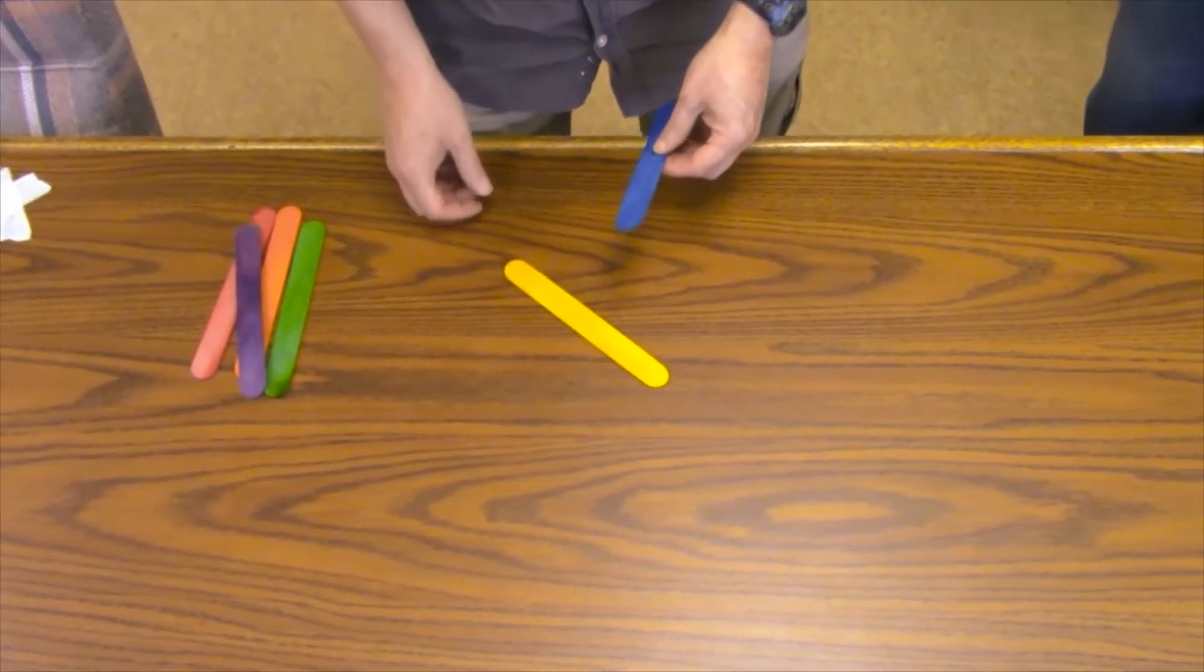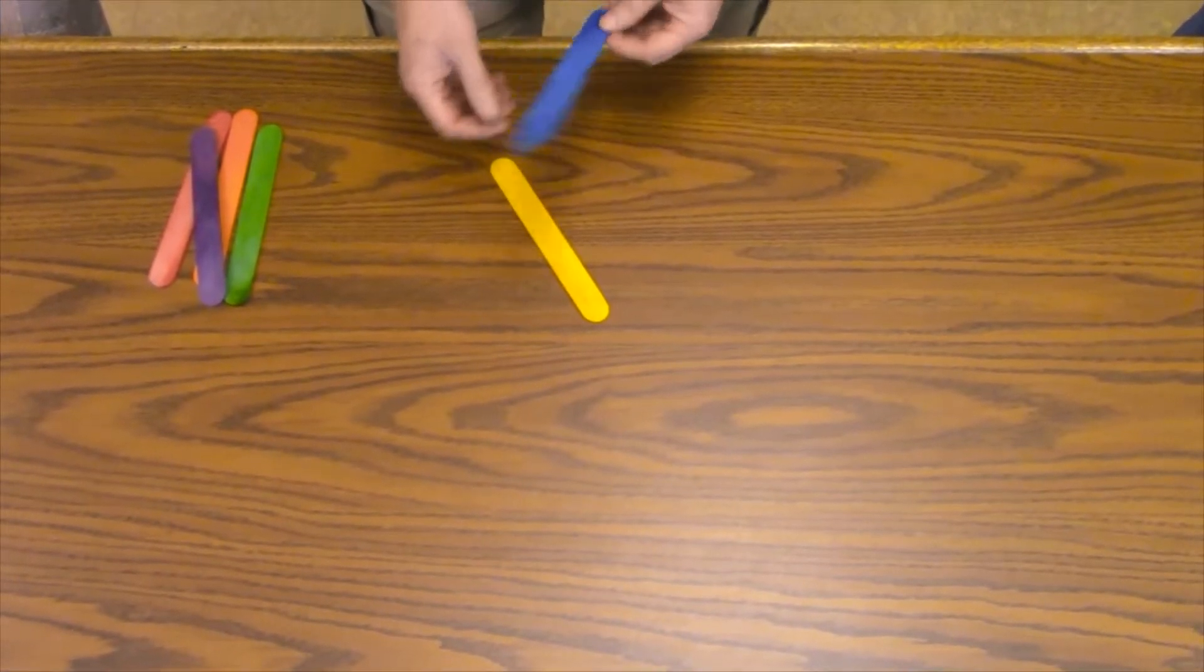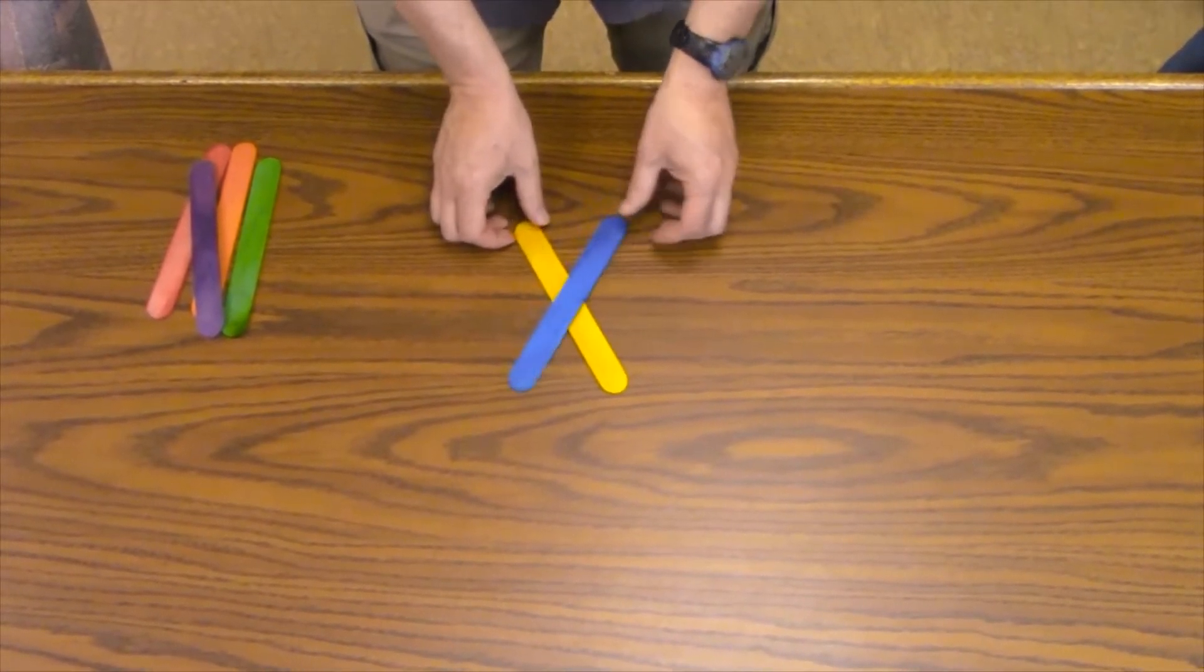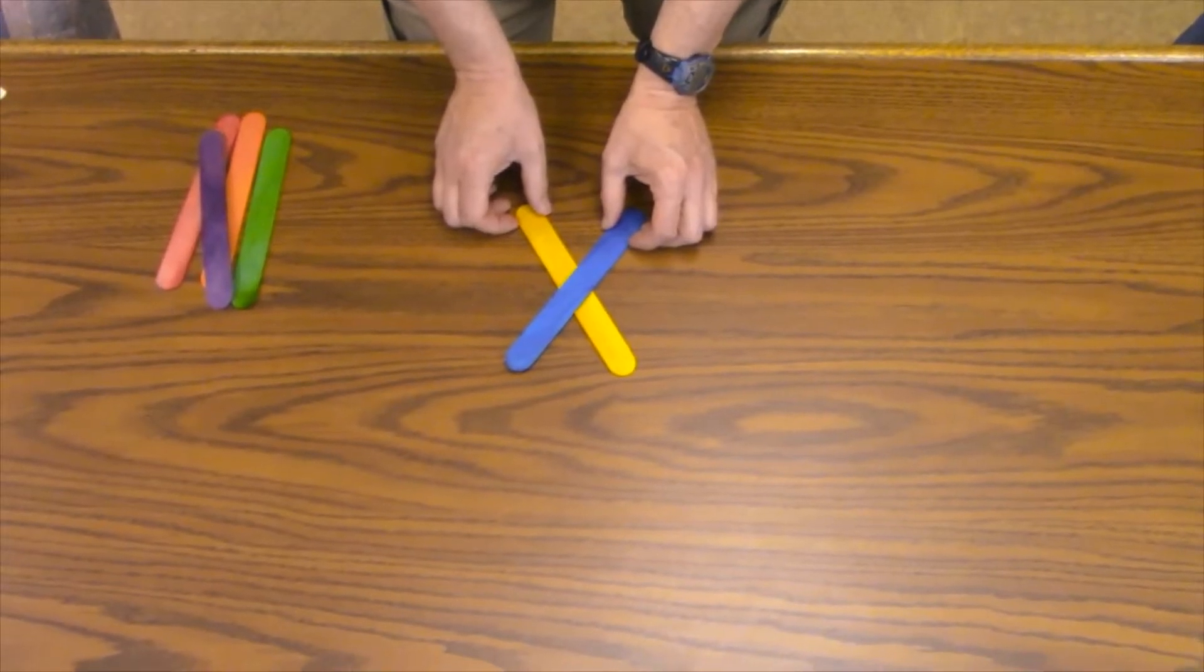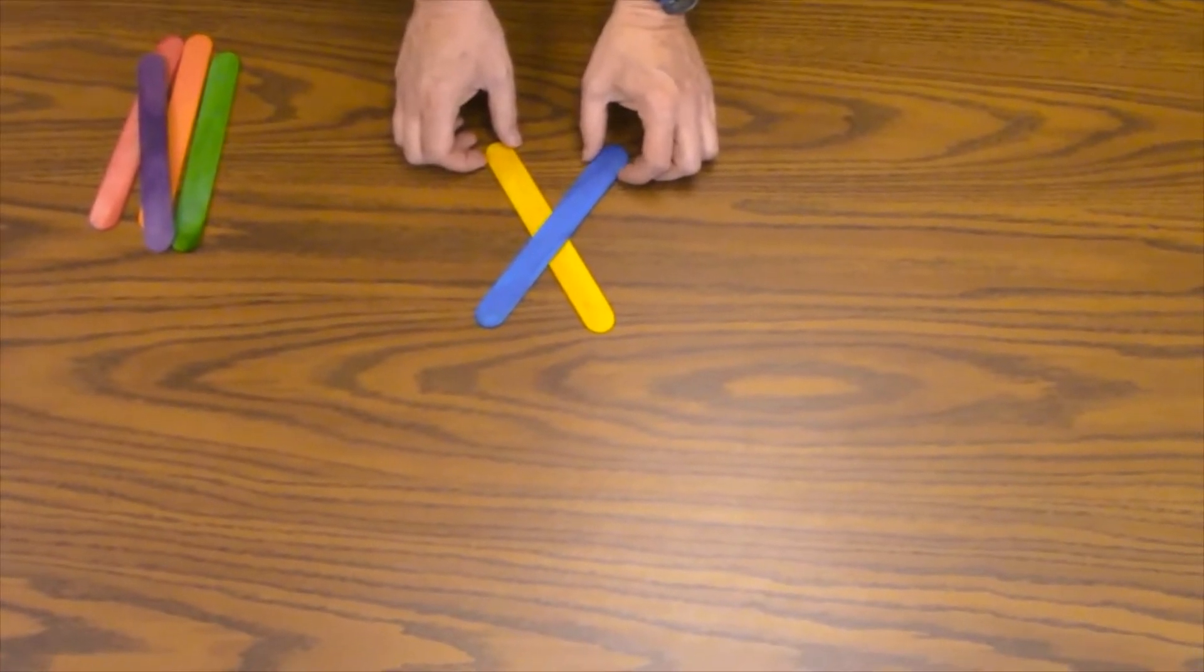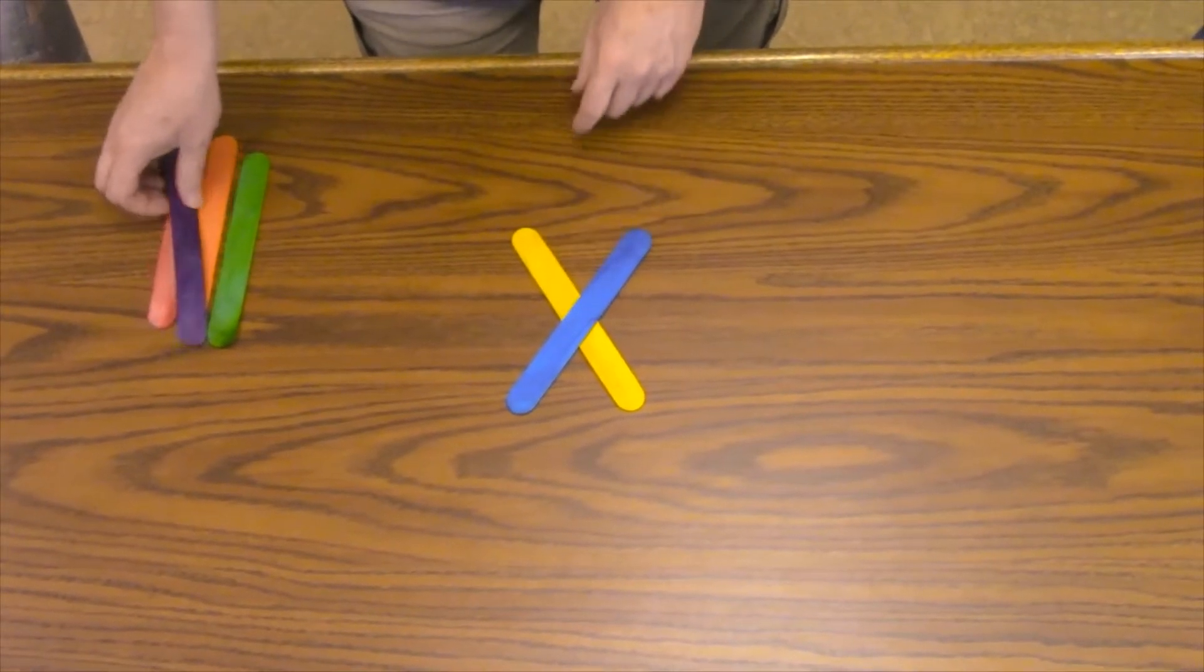Alright, so how do we do the CDC stick bomb? We start off with two sticks. Lay them in a rough X shape. That stick has to stay on top.